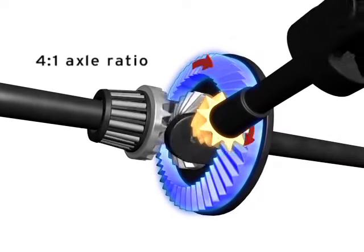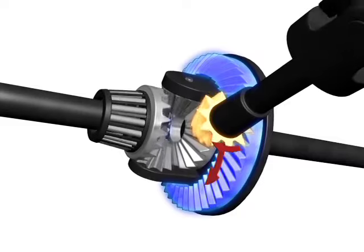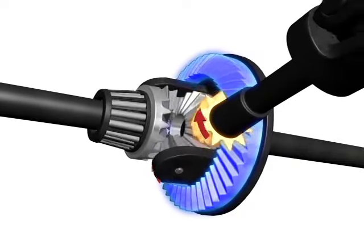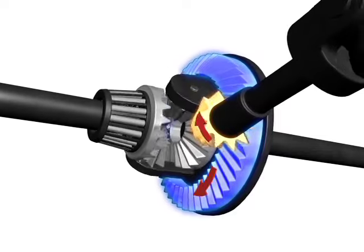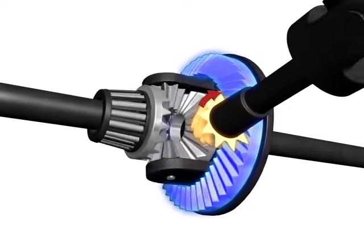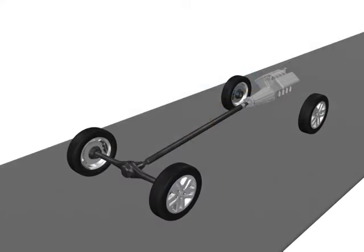By changing the axle ratio, the torque multiplication and top speed is changed, either increasing or decreasing them. Axle ratio is an important component of the transmission gear ratio. All the gear ratios between the engine and drive wheels determine how much power is actually applied to the wheels.